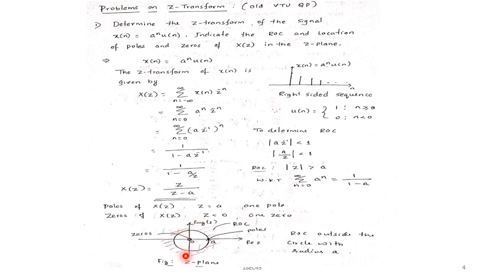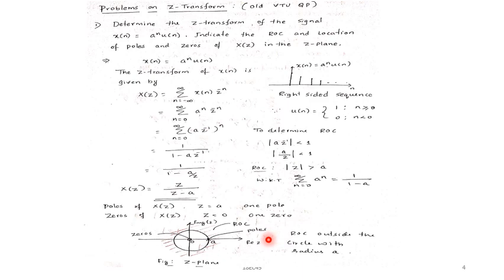To represent the ROC, poles, and zeros in the Z-plane, I draw the Z-plane with imaginary and real axes. The ROC is magnitude of Z greater than A, so I draw a circle of radius A. The ROC is outside the circle, indicated by shaded lines. The pole at Z equal to A is represented with a cross mark, and the zero at Z equal to 0 is represented with a small circle. This gives the complete Z-plane diagram with ROC, one pole, and one zero.